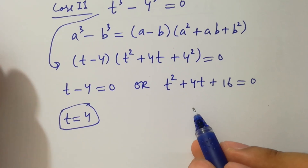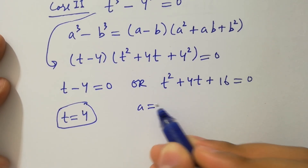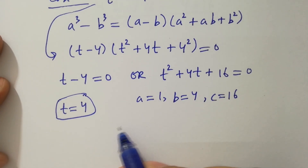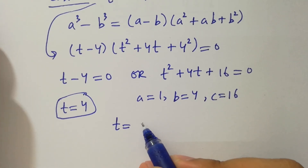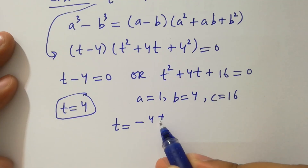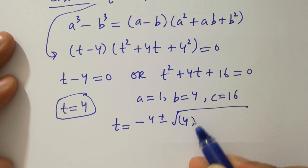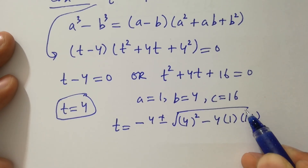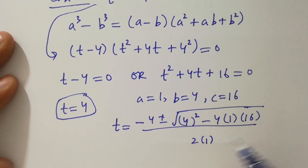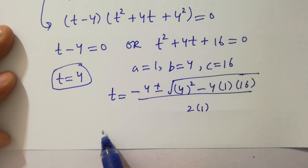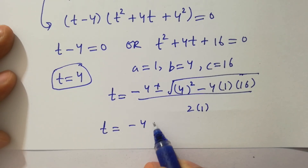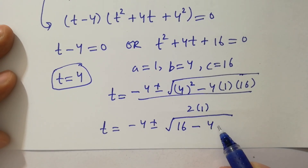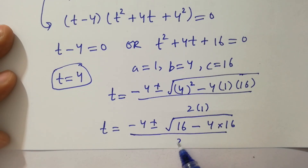For the quadratic factor, we have a equals 1, b equals 4, and c equals 16. Applying the quadratic formula: t equals minus b, which is minus 4, plus or minus square root of 4 squared minus 4 times a times c, where a is 1 and c is 16, over 2a, where a is 1. Simplifying: t equals minus 4 plus or minus square root of 16 minus 64, over 2.